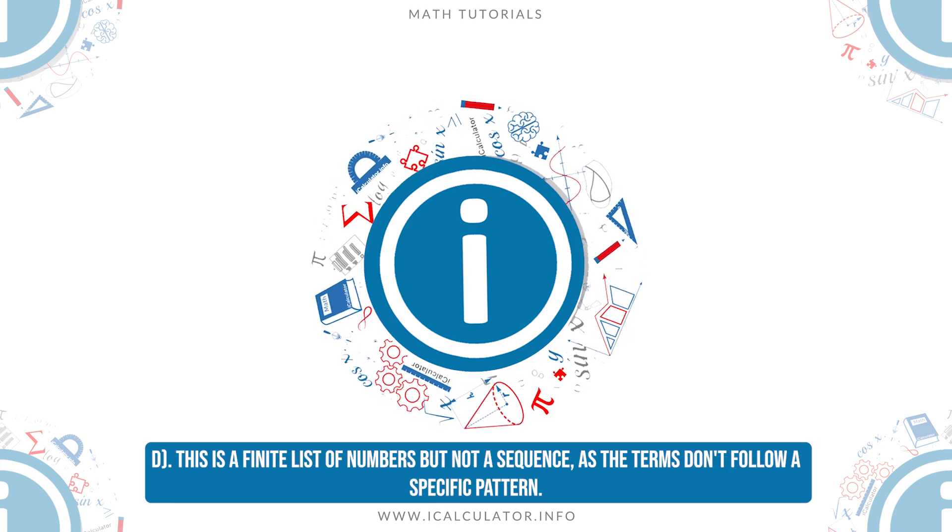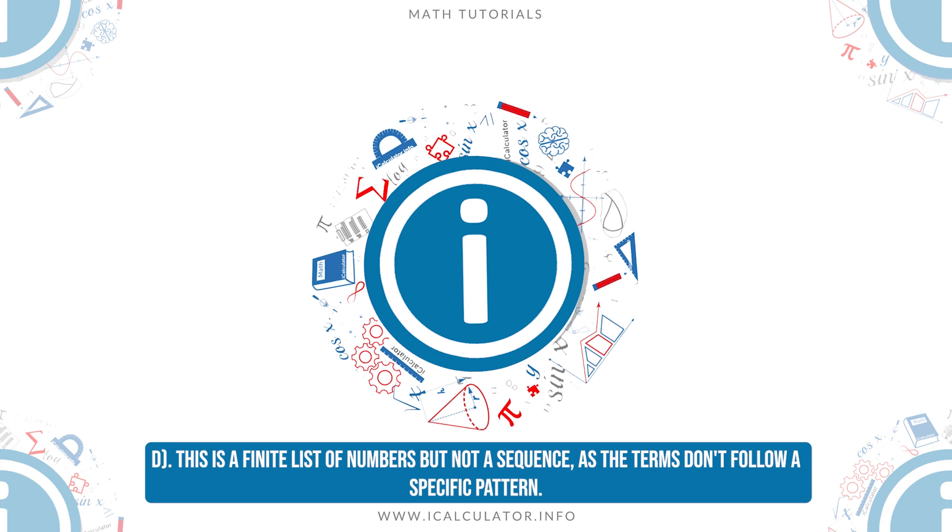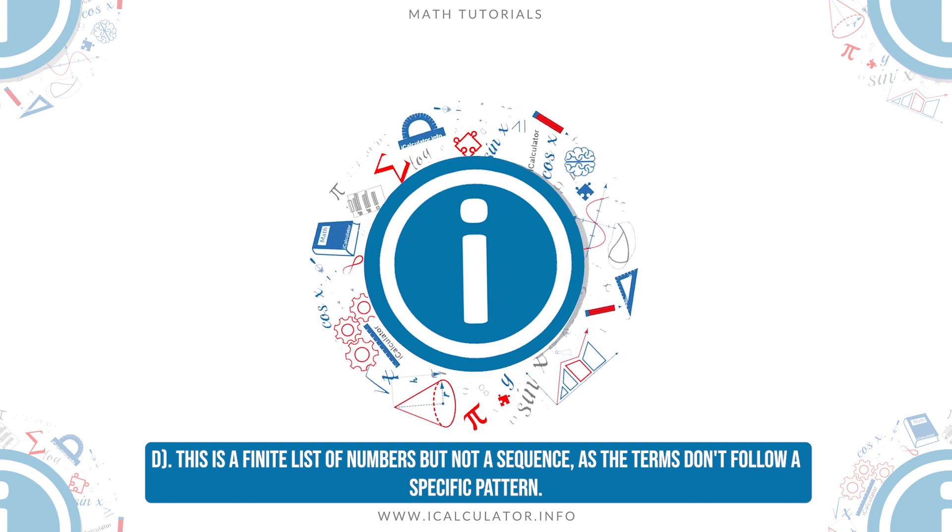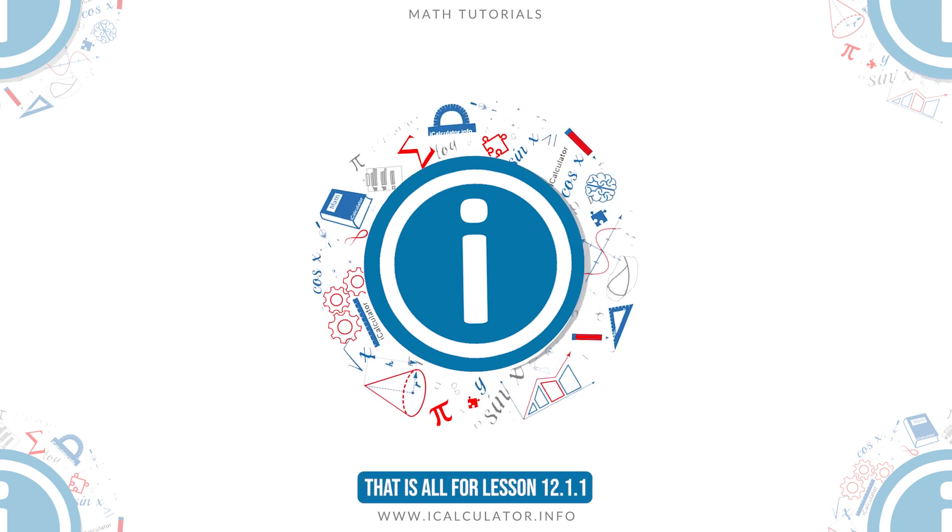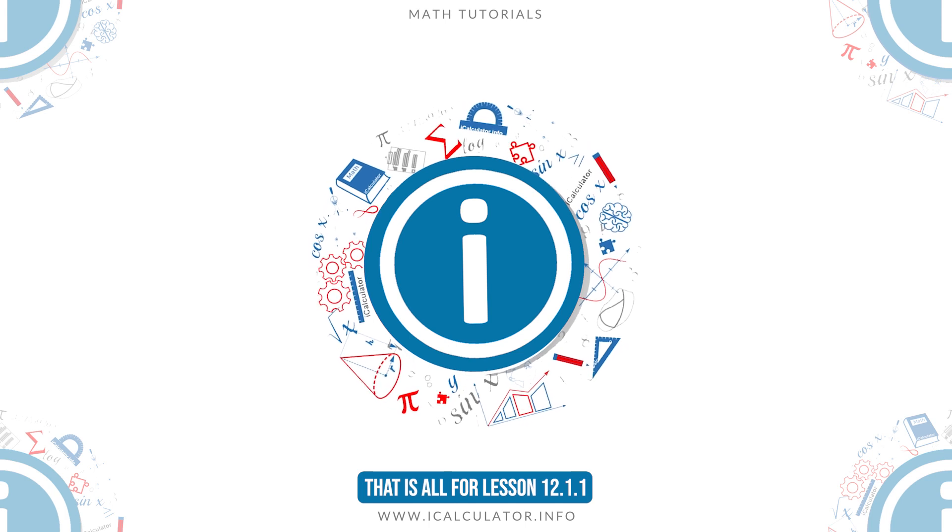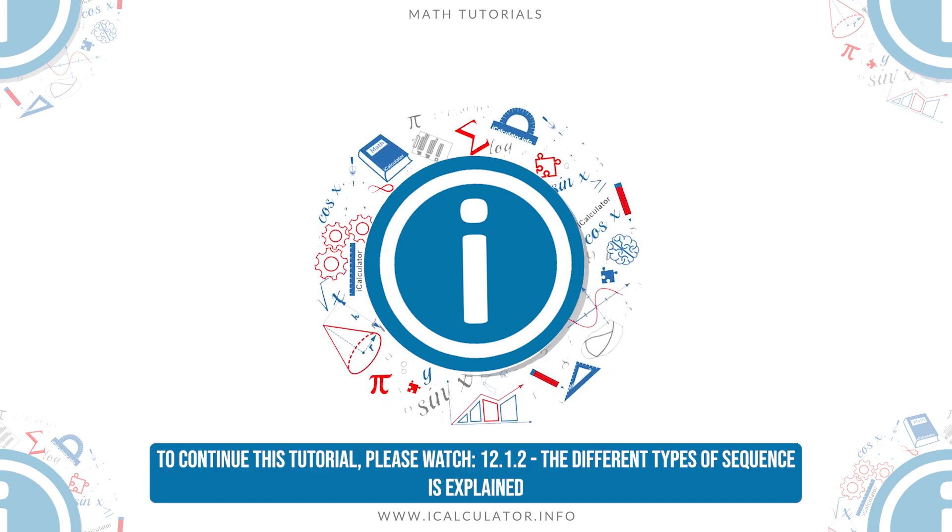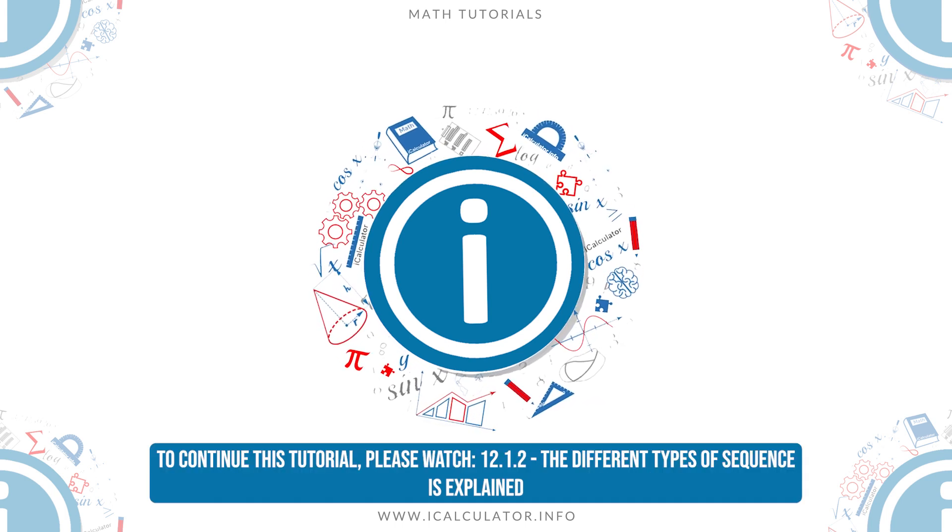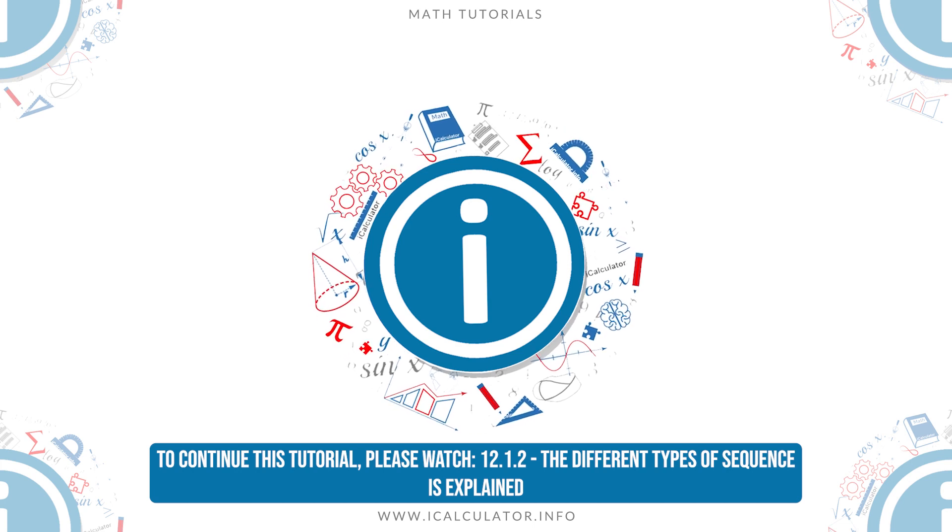D: This is a finite list of numbers but not a sequence, as the terms don't follow a specific pattern. That is all for lesson 12.1.1. To continue this tutorial, please watch 12.1.2, the different types of sequences explained.